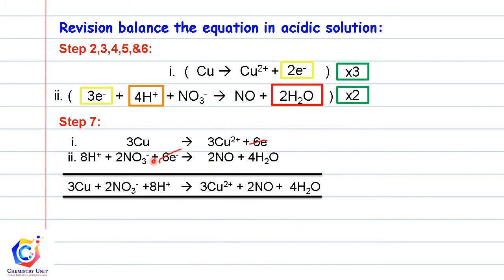And then cancel off the six electrons, six electrons. So this is the balanced equation in acidic medium.